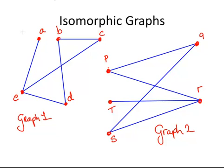In each case, what we are going to do first is write in the degree for each vertex. So that's degree 1, degree 3, degree 2, degree 2, degree 2. And in graph 2, this is degree 1, degree 3, degree 2, 2, and 2.